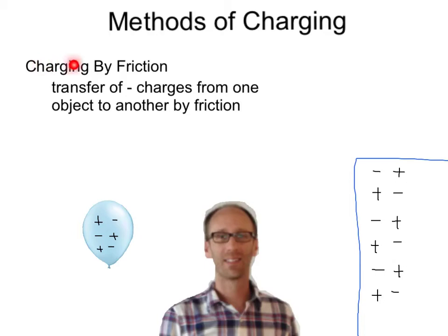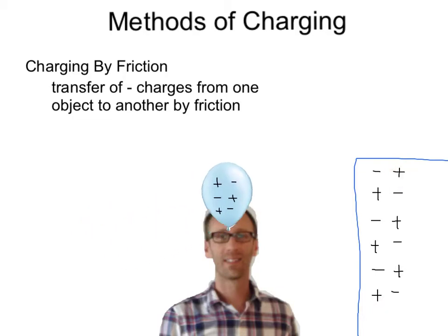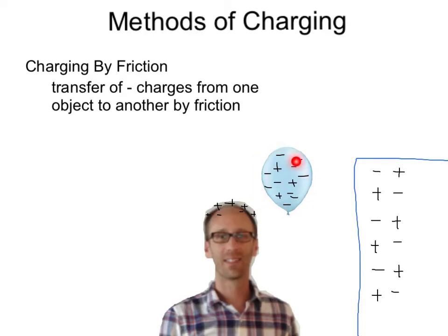The first method of charging is charging by friction. This is simply the transfer of negative charges from one object to another by friction. Here's an example: you have a neutral balloon with three positives and three negatives, and a neutral wall with the same amount of positive and negative charges. When I rub the balloon on my hair, the balloon becomes slightly more negative — it has picked up negative charges from my hair. My hair would now be slightly more positive as it lost negative charges to the balloon. We would say the balloon is charged by friction.